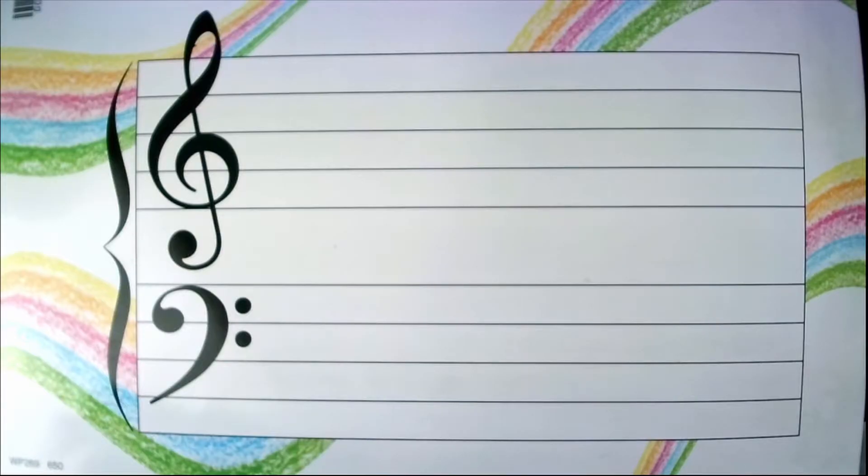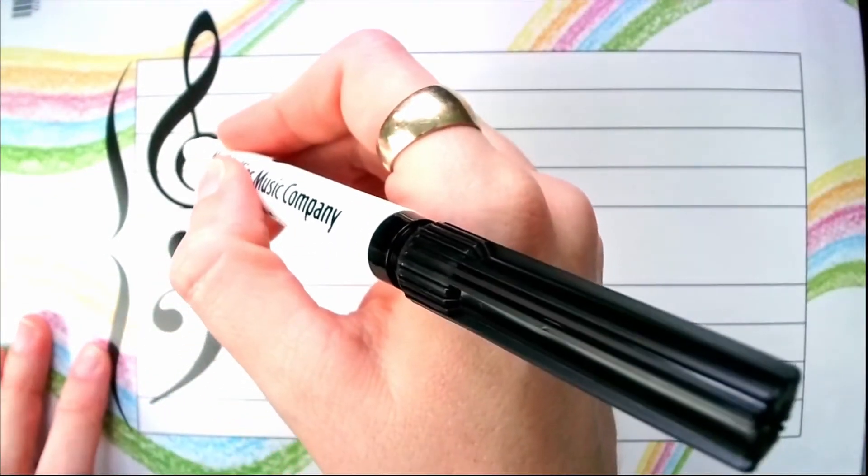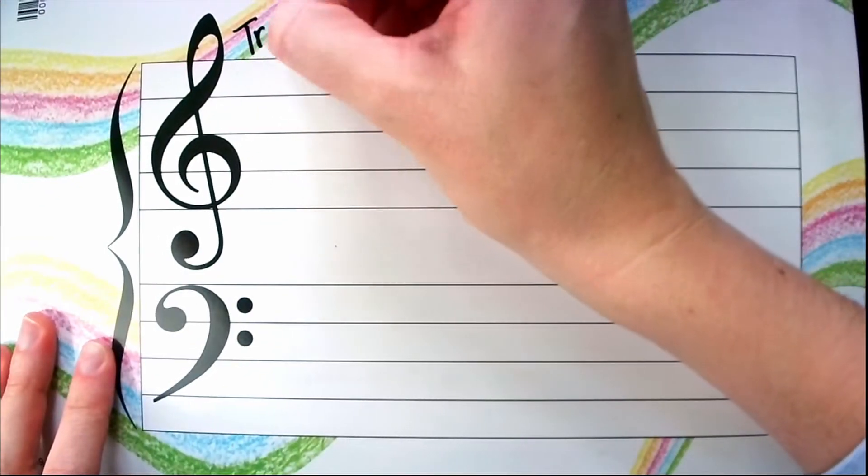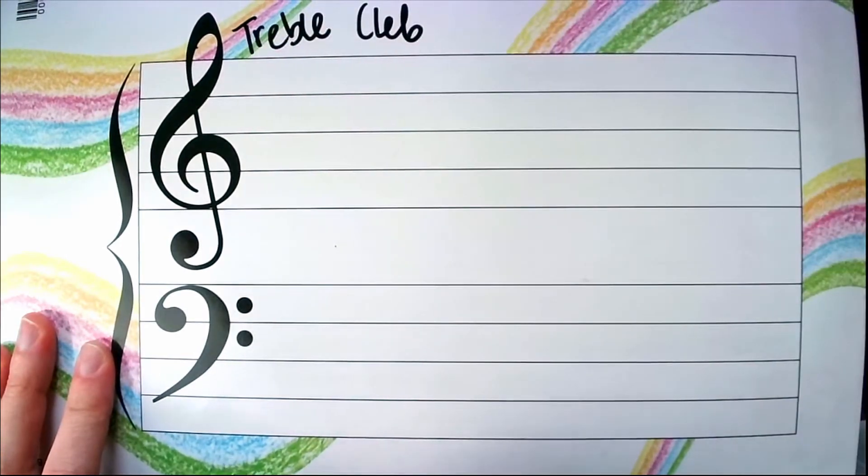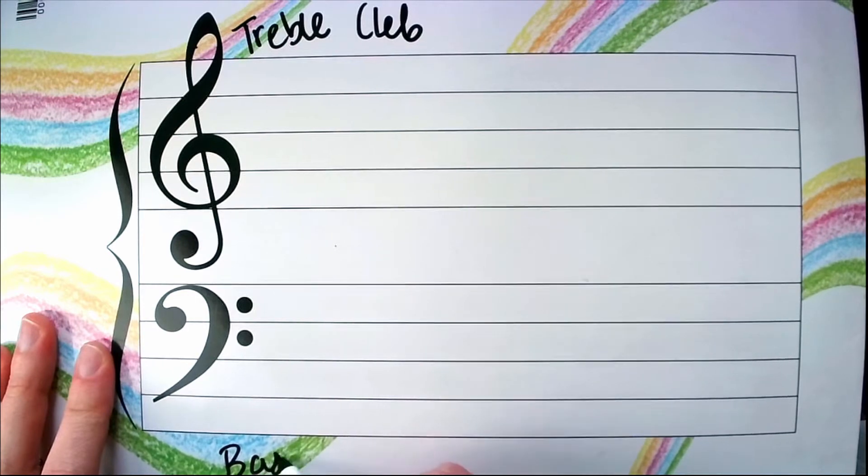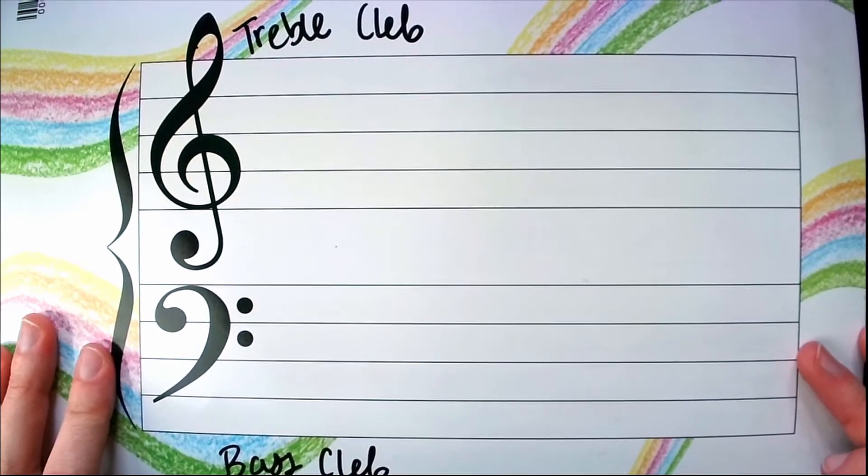Okay guys, so here we have our grand staff. As you can see, we have two sets of our five lines and four spaces. So for our right hand, we see our treble clef here. And for our left hand, bass clef. So that's how those go together.